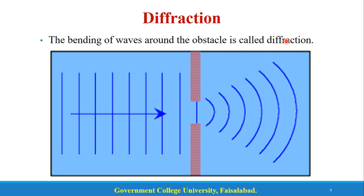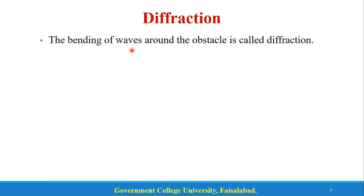The bending of waves around the obstacle is called diffraction. You can see here a pictorial view of the geometry. The waves are propagating here and there is an obstacle, or you can say an aperture — an opening end. It involves bending. If we revise the definition, then there are two things that are important: the waves and the obstacles.